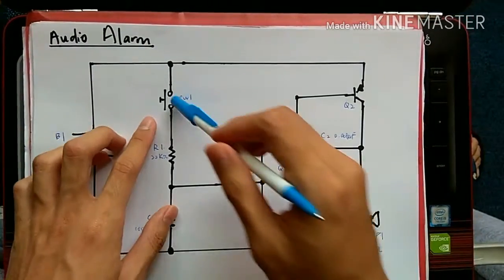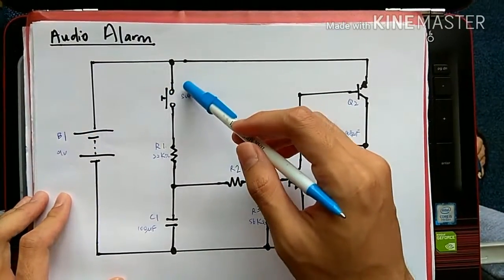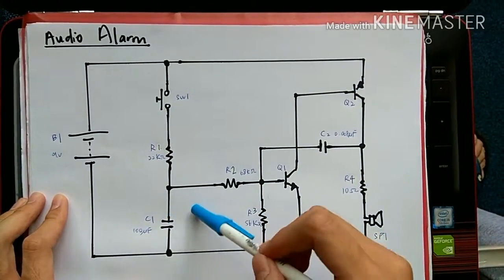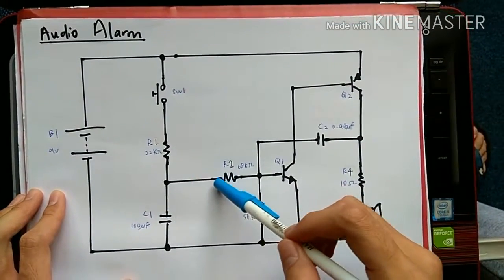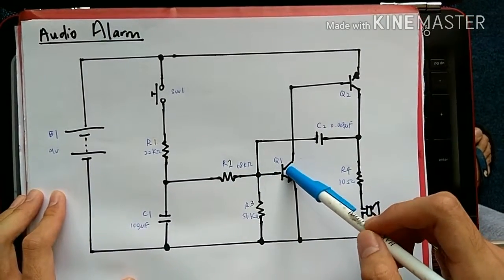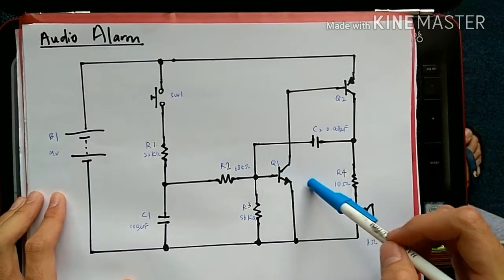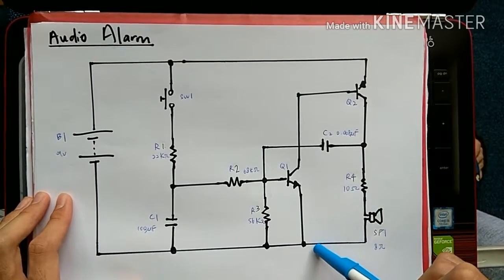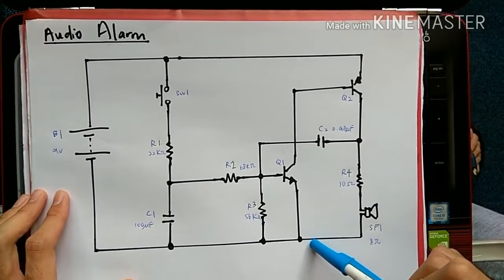When we release switch S1, as a result, C1 will begin to discharge and it will make the voltage at pin B drop. It will make the frequency go quietly until the circuit switches off. Thank you.